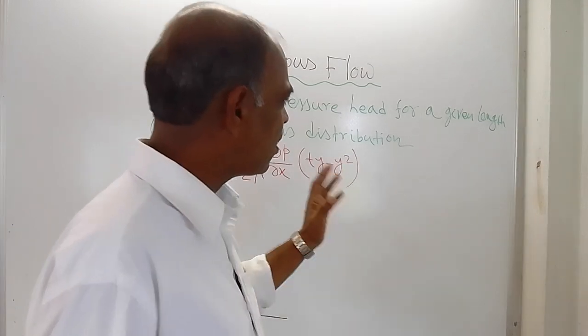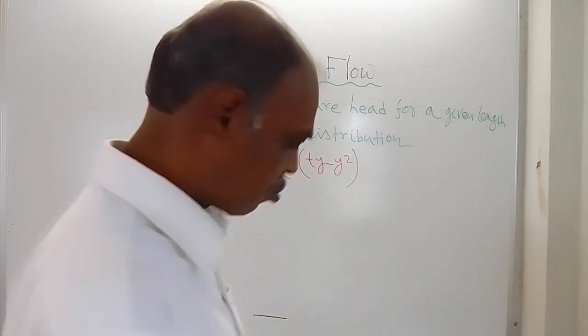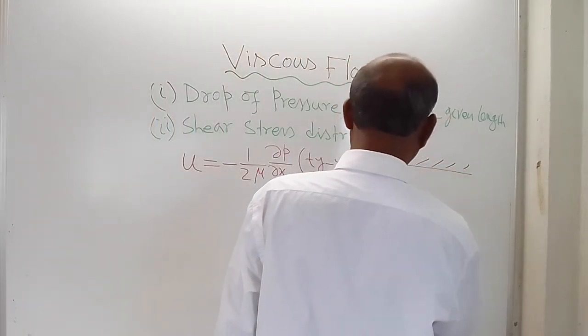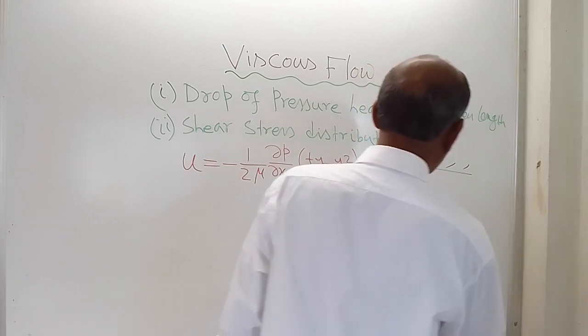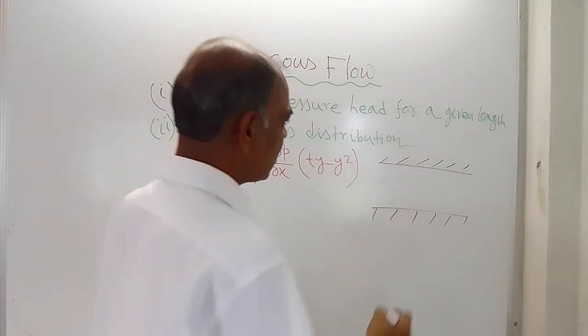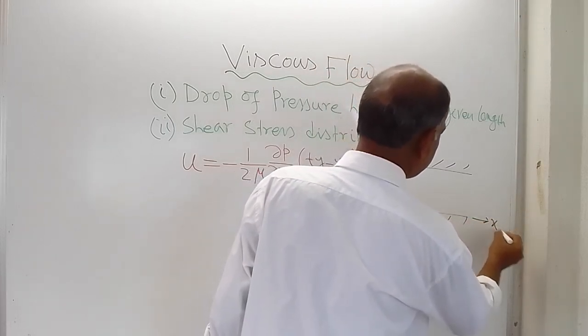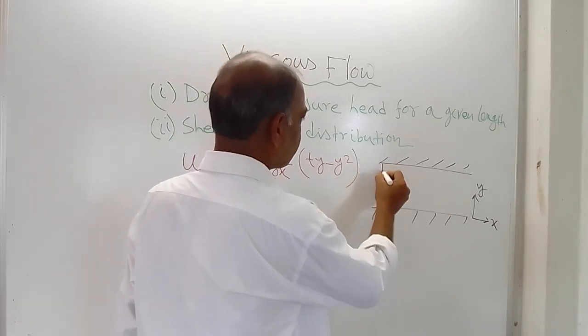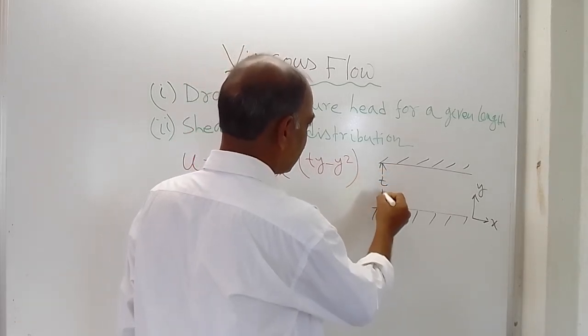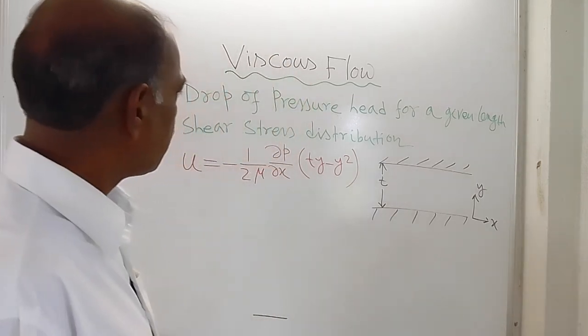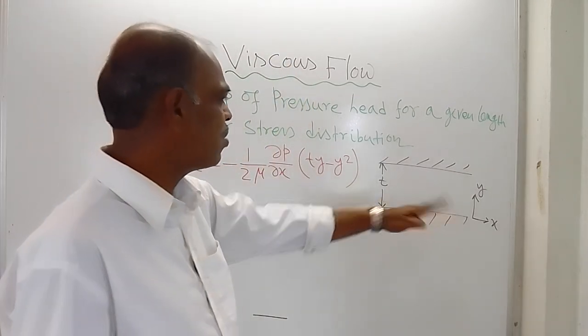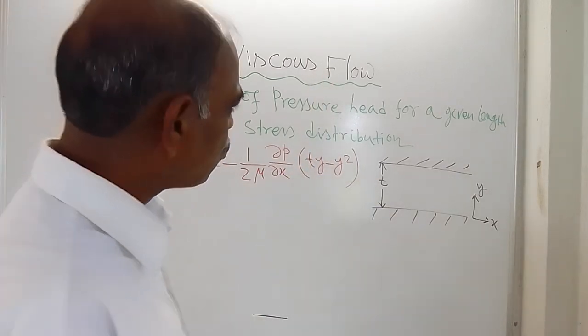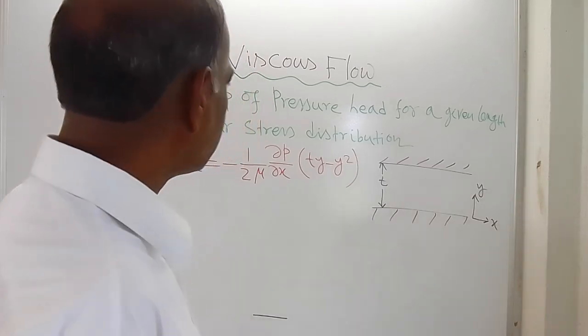You have seen that for the flow, let me draw this sketch first. These are the two parallel plates. This direction, the horizontal direction, is x, the vertical direction is y. The distance of separation between the plates is denoted by t. P is pressure, x is this direction, y is this direction, t is the separation.